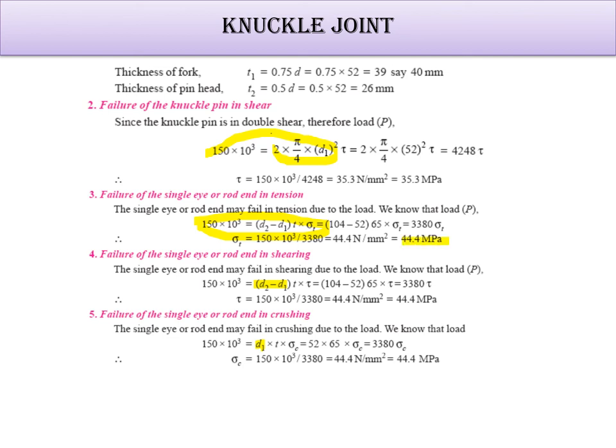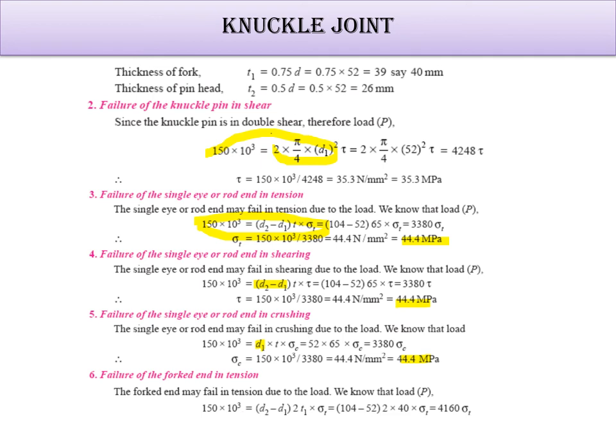So in knuckle joint, this value should be same for all. Just remember, if you are getting the same value, that means you are going to the right track. If you are not getting the same value, that means some calculation mistake you have. Same thing for the fork end. Where we have to put only 2. Just add 2 here. D2 minus D1 into 2 times T1. Instead of T, write T1. Check the value. The value you will get, load divided by D1 into 2 T1 into sigma T. Sigma T is 36 Megapascal. That means design is safe.